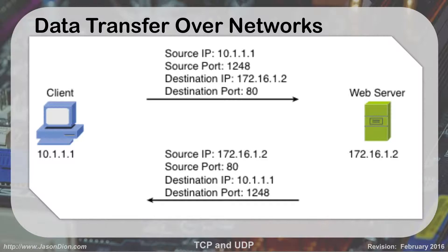When we send data over the network, going from client to web server, I call out to the web server on port 80 — which is web traffic. That's my destination port. 172.16.1.2 is the IP of the server. I called from a high ephemeral port — in this case 1248, something higher than 1,024. When the server replies, it sends it back to me on port 1248. When my computer gets that, it knows that was your Facebook connection and sends the information to my web browser. That's how it keeps streams of data separated — by using these ports.